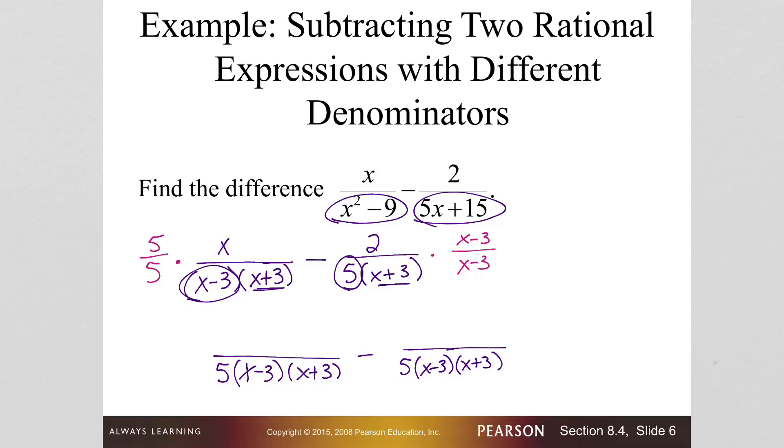So on the left, our numerator becomes 5x. On the right, now go ahead and distribute out your 2, so you've got 2x minus 6.